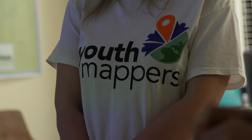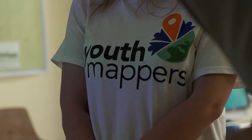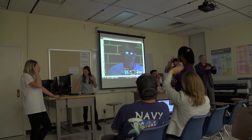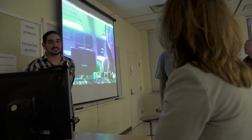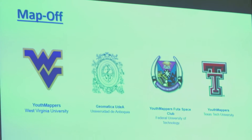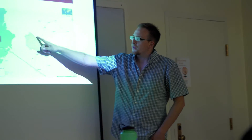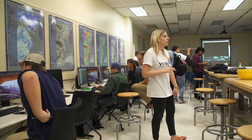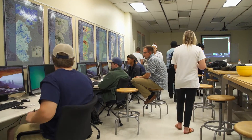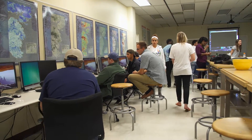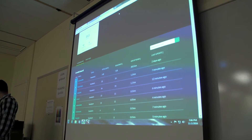Youth Mappers is a network of student chapters around the world. Right now we have 39 universities in 12 countries. Tonight we had a group from Nigeria and from Colombia, and our co-founding university at West Virginia University. Everyone's mapping in the same place, and we will be doing a little friendly competition to see how well we did, how many edits to the map we made, and how much we contributed.